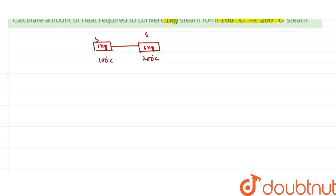Where m is the mass, s is specific heat, and delta t is change in temperature.